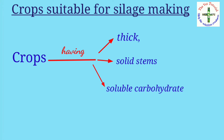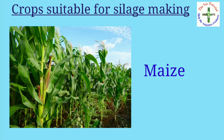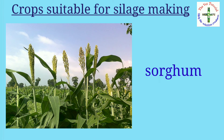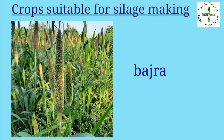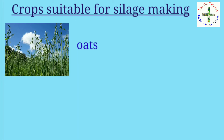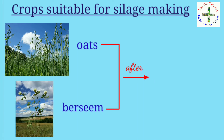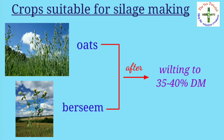Crops having thin, thick solid stems and rich in soluble carbohydrates are best for silage preparation — for example, maize, sorghum, and bajra. Silage can also be prepared from oat and berseem after wilting to 35 to 40 percent dry matter.